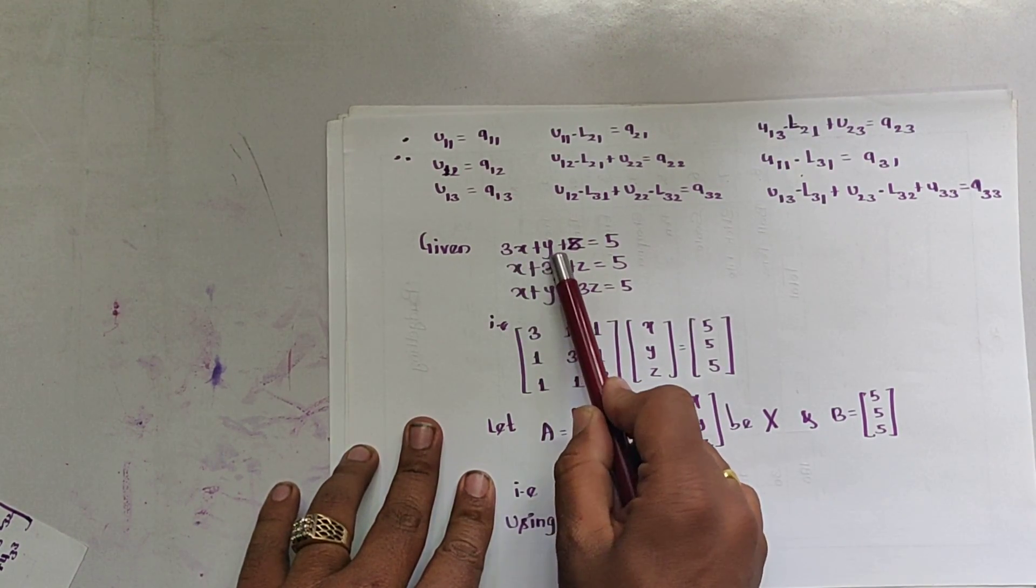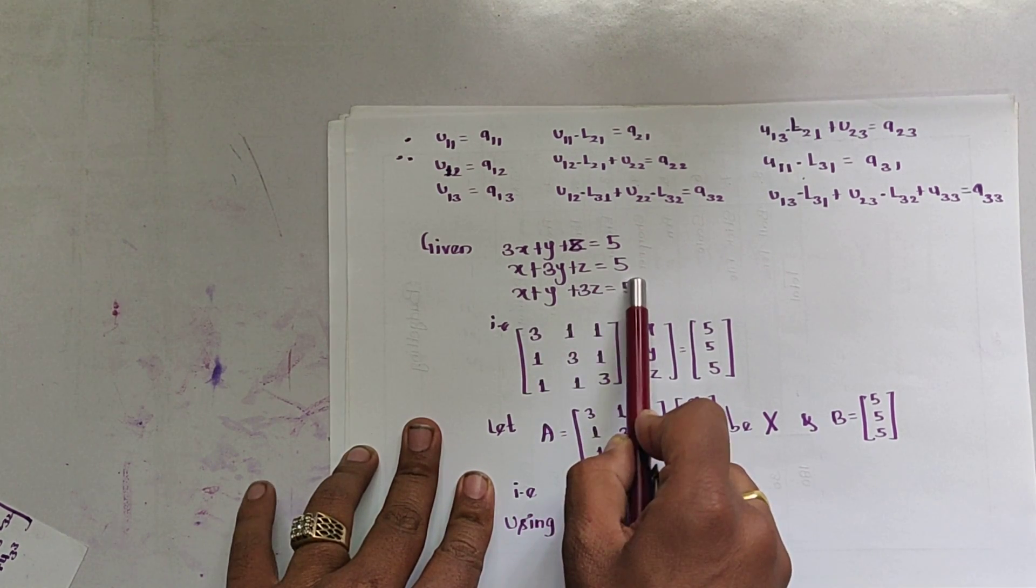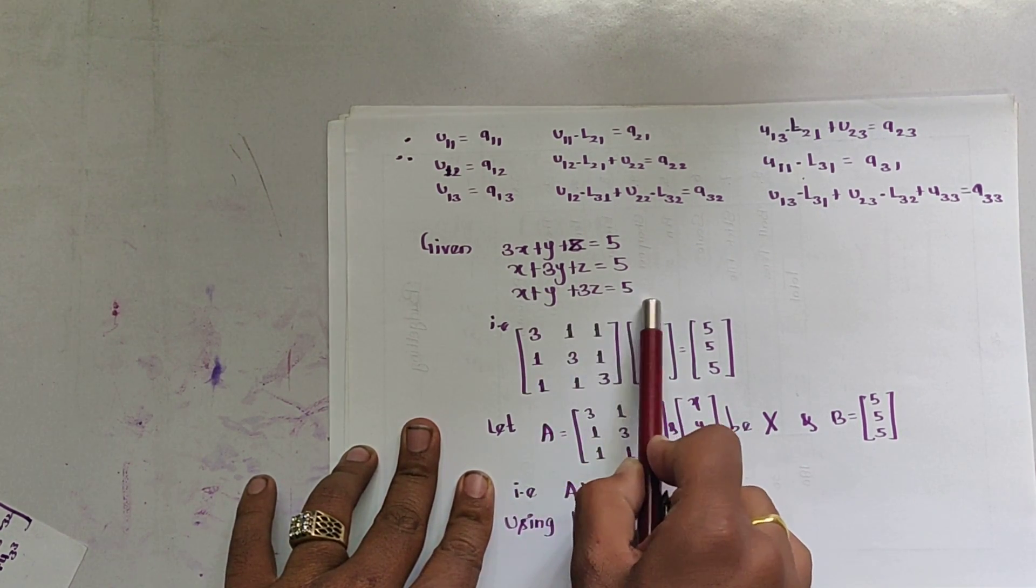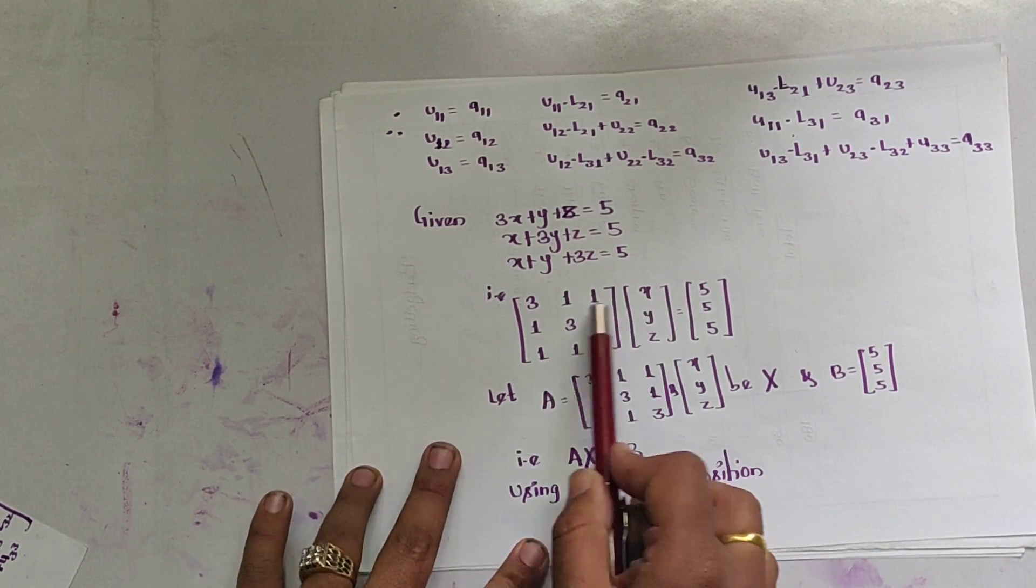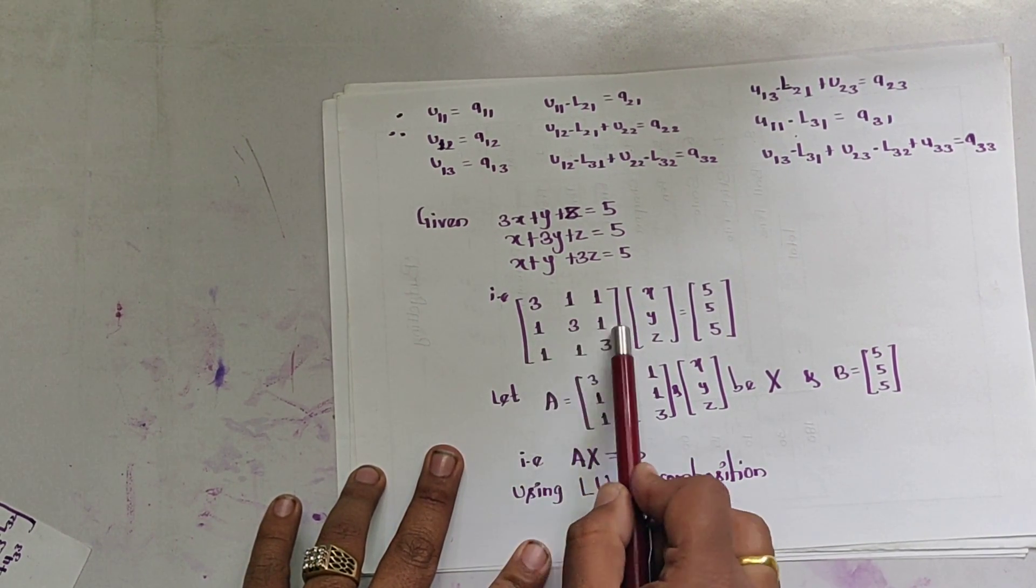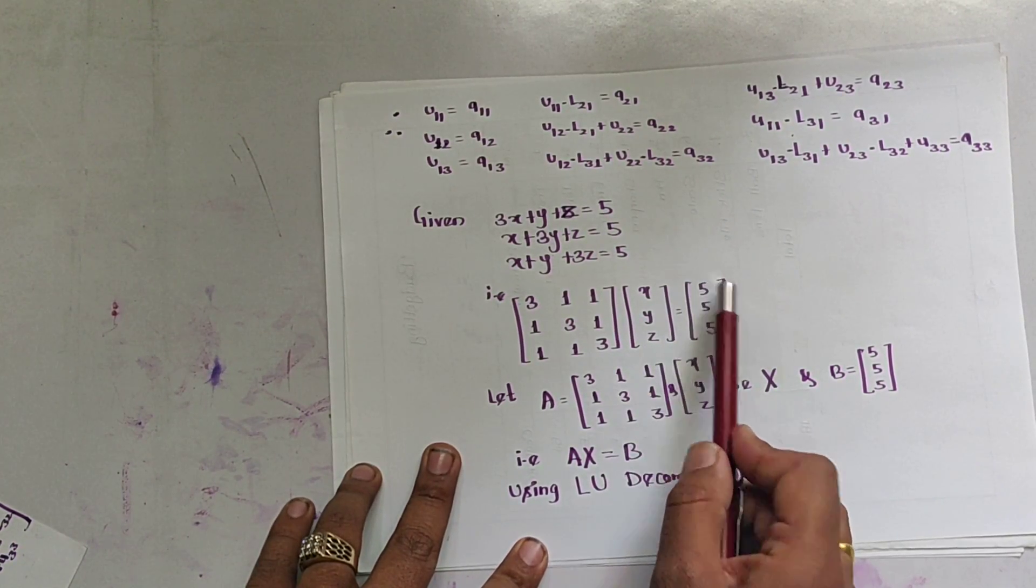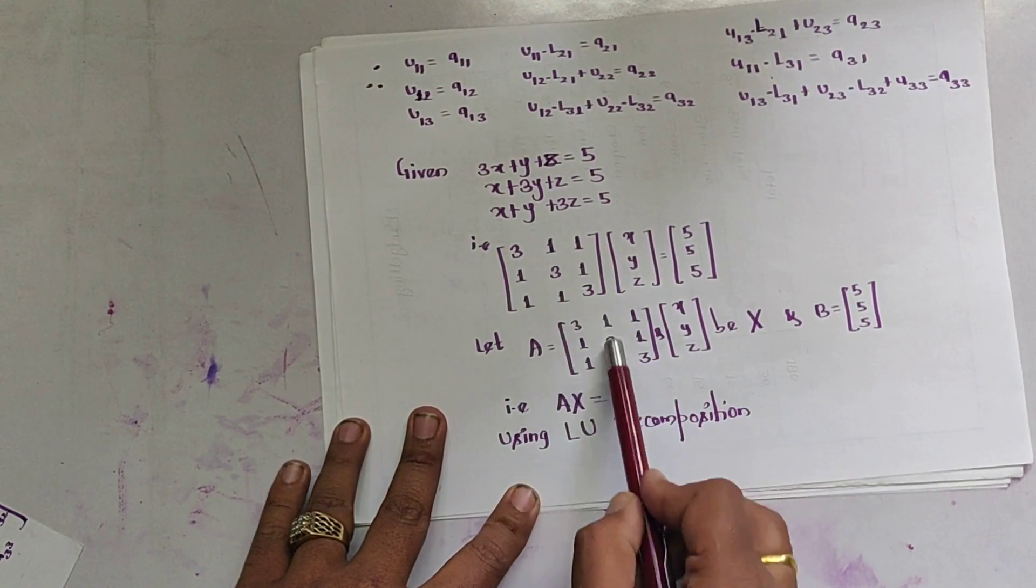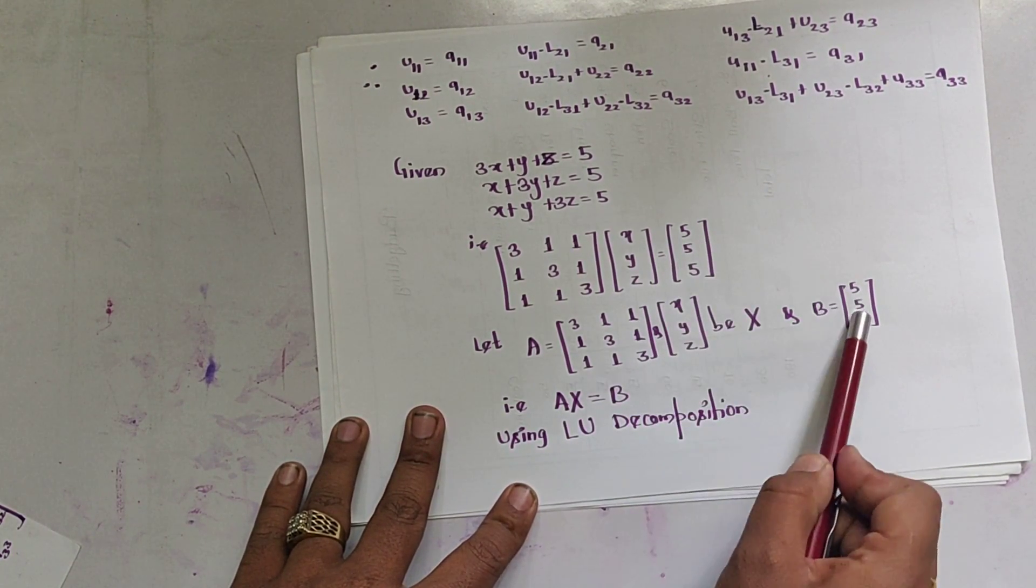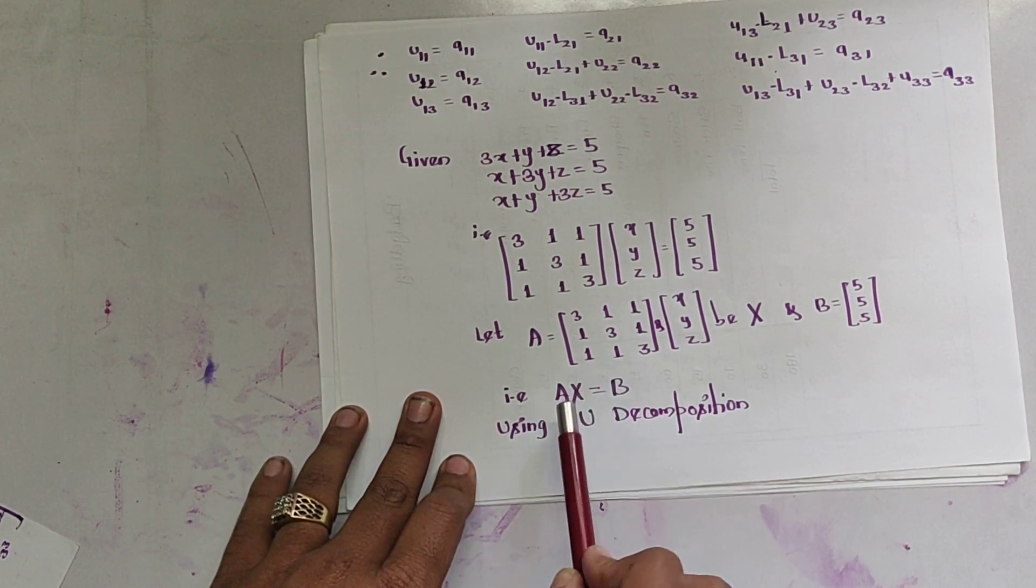Given is 3X + Y + Z = 5, X + 3Y + Z = 5, X + Y + 3Z = 5. It can be converted into matrix form: 3, 1, 1; 1, 3, 1; 1, 1, 3; X, Y, Z and 5, 5, 5. Let us consider this matrix is A, this is X, and this is B. So AX = B.